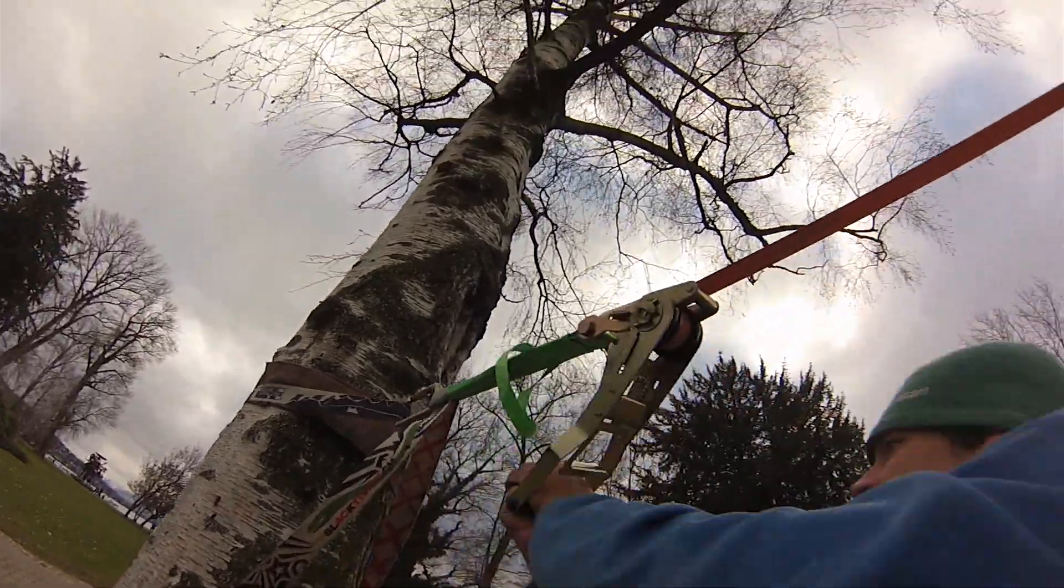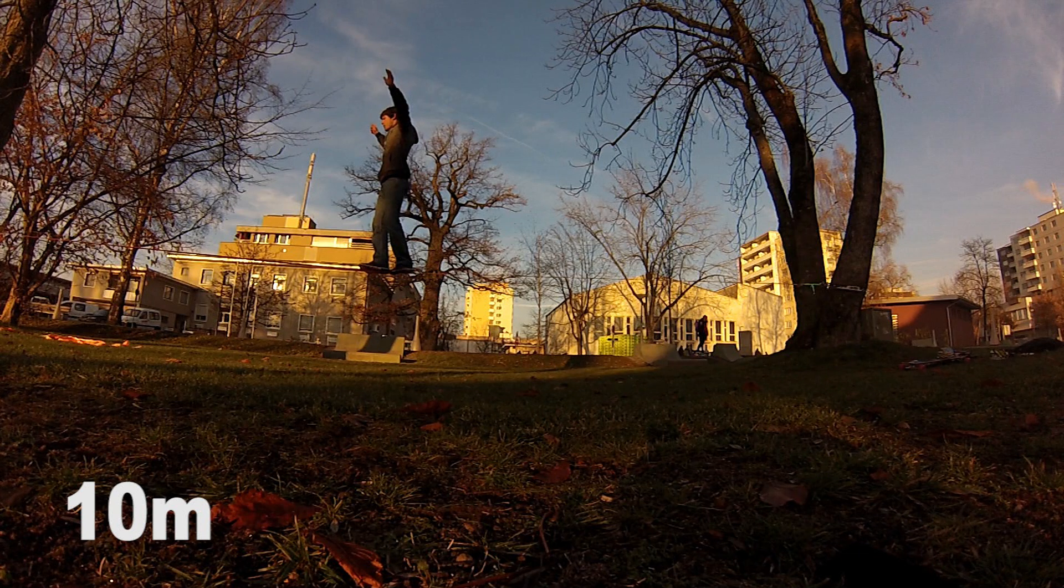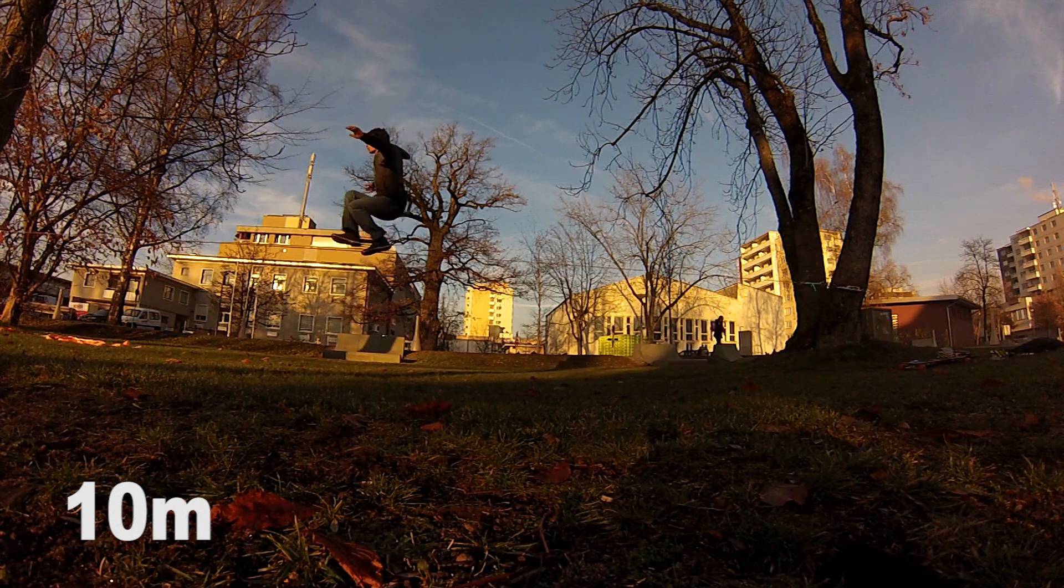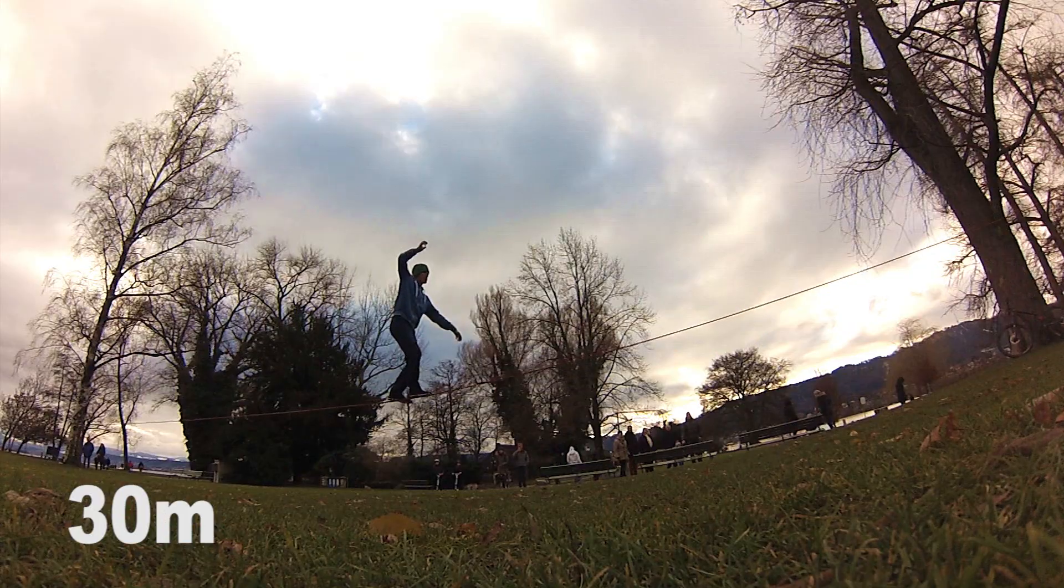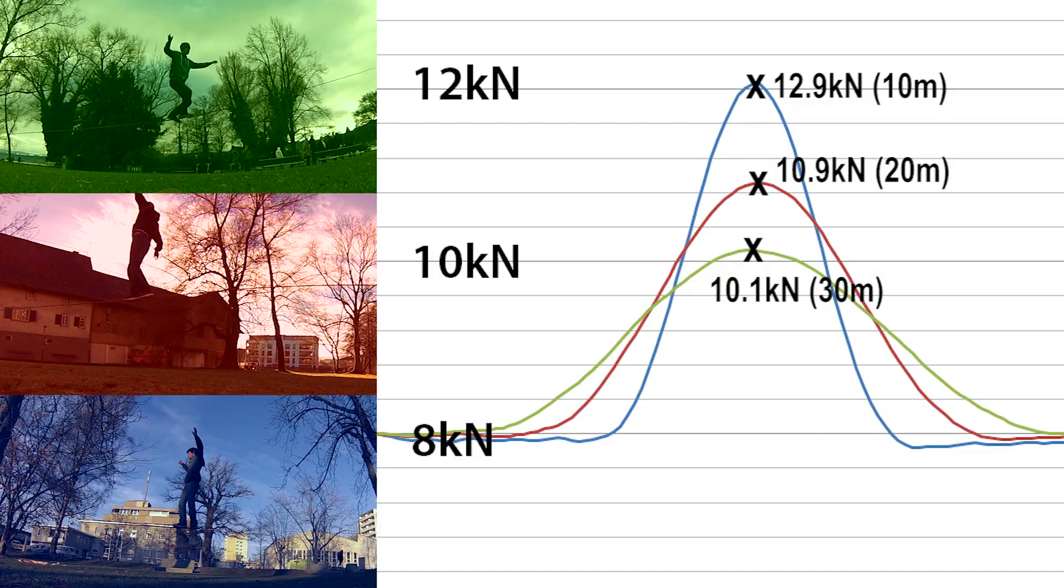The pretension was set on 8kN, as this is quite the typical jumpline tension. Then I tried to make a butt bounce in the middle of the line. I always tried to make it as similar as I could, as far as this is possible on such different lengths.